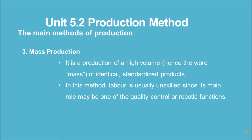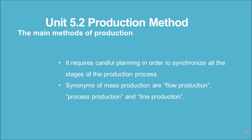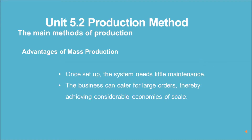Mass production is the production of a high volume of identical, standardized products. In this method, labor is usually unskilled since its main role may be one of quality control or robotic functions. It requires careful planning in order to synchronize all the stages of the production process. Synonyms of mass production are flow production, process production, and line production.